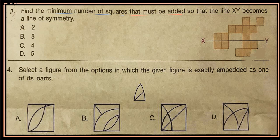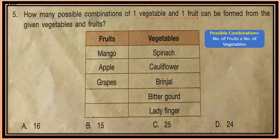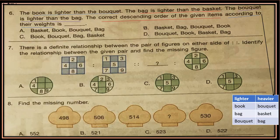Question 5: How many possible combinations of one vegetable and one fruit can be formed from the given vegetables and fruits? See the table, then see the hint on the right side and try to solve the question.